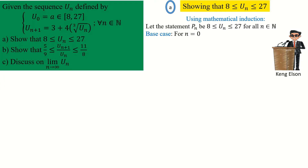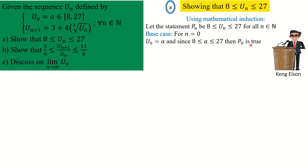For n = 0, we check whether our statement is true. u_0 equals a, and according to the equation, a is in the interval (8, 27), meaning a is greater than 8 but less than 27. Hence the statement P(0) is true, because replacing n with 0 gives u_0 = a, which is between 8 and 27 as originally defined.